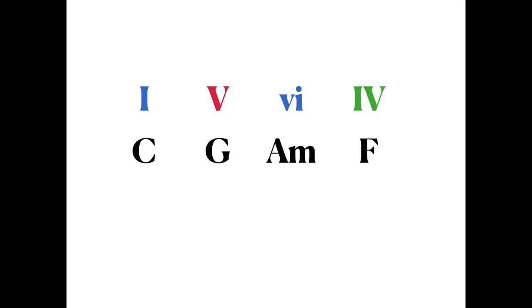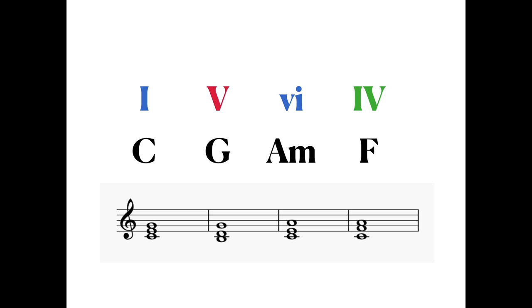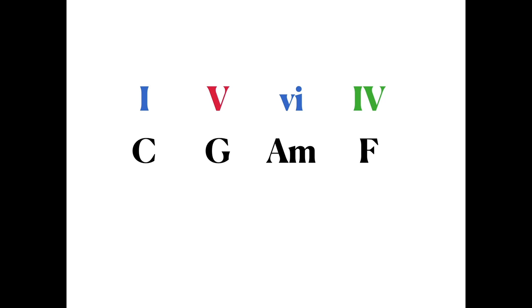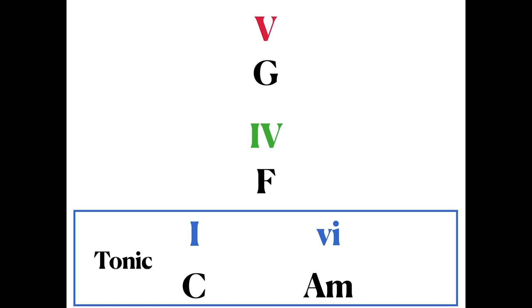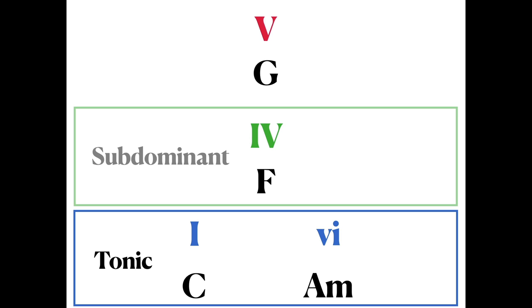Part of this stability or instability is whether they contain the F and B, which due to their position in the scale have a gravitational pull down and up respectively. Some perspectives of harmony place these four chords in three groups: tonic groups, which can be considered stable—C major and its moodier sibling, A minor; the subdominant, less stable category, which has F major.